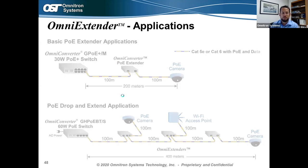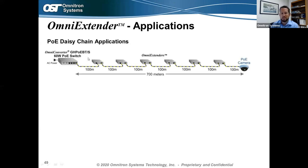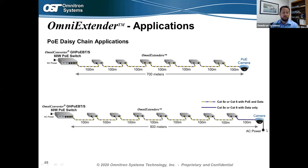Daisy chaining PoE extenders can reach up to 700 meters. Coming out of a 60W PoE switch, it's 100 meters to each PoE extender; the extenders draw about 5 watts of power each, and there will be some power loss over the copper cabling with distance, but there's still enough PoE power at the end to power a camera and provide data up to 700 meters away. If local power is available at the far end but you only need data, you can extend up to 800 meters with Ethernet only.